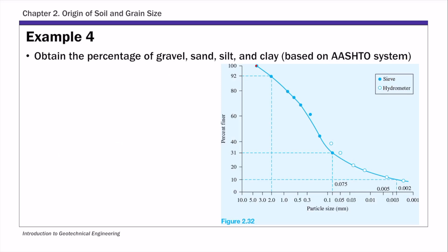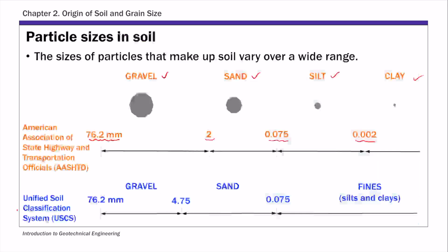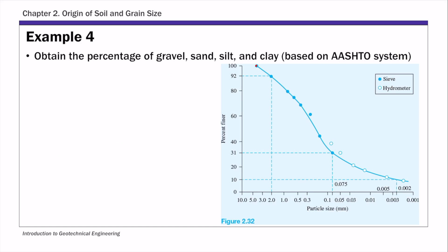So now come back to this particle size distribution curve. First thing, let's identify the threshold values on this curve. For this curve the largest particle size is approximately 4 mm. And so if you look at this AASHTO system, notice anything larger than 2, smaller than 76.2 is gravel. So for this curve there's no 76.2 so anything larger than 2 mm is going to be classified as gravel. And then the other threshold values are the 0.075 mm and 0.002 mm. So these are the threshold values between sand and silt and silt and clay.